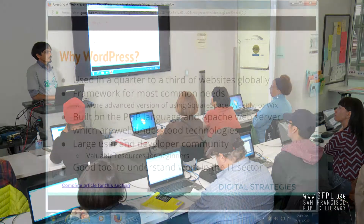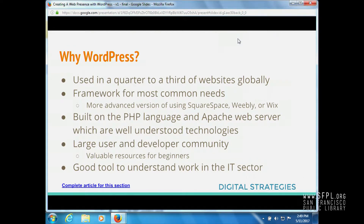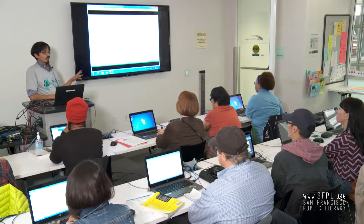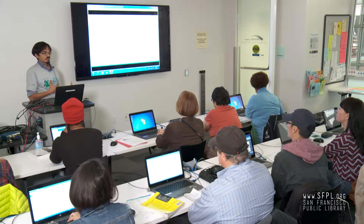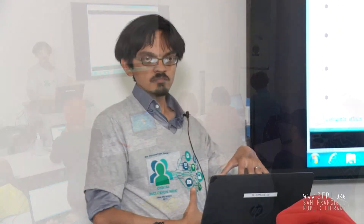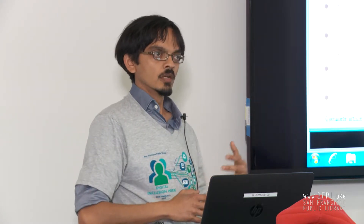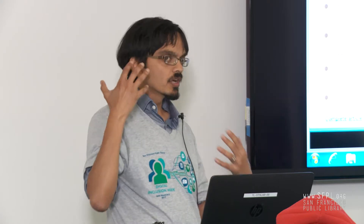So why do we pick WordPress for today? Not only is it used in an incredible number of websites all around the world, making it highly reliable, but it's been worked on by thousands — perhaps tens of thousands — of people. It is built on open source technologies, which means there's much more of a chance that it can't go out of business. Whereas if Microsoft shuts down tomorrow, all their services shut down. WordPress survives mainly because of people who don't even work at WordPress.com. There's a huge developer community, which also makes it a great tool for understanding what it feels like to work in the IT sector.